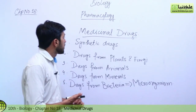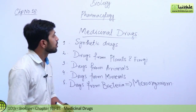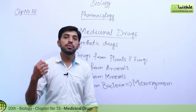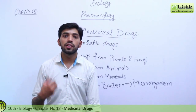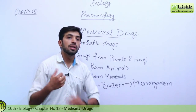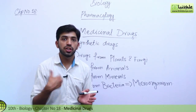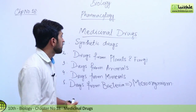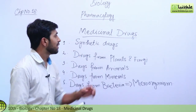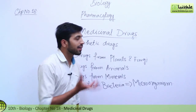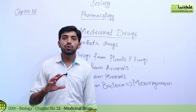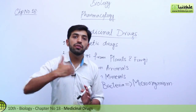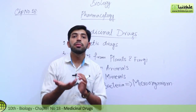If we look at medicinal drugs, there are some kinds of drugs that occur in a natural way, and some kinds of drugs that we produce in a laboratory in an artificial way. First of all, synthetic drugs — synthetic drugs are such drugs that don't exist naturally, but we can synthesize them in a laboratory.